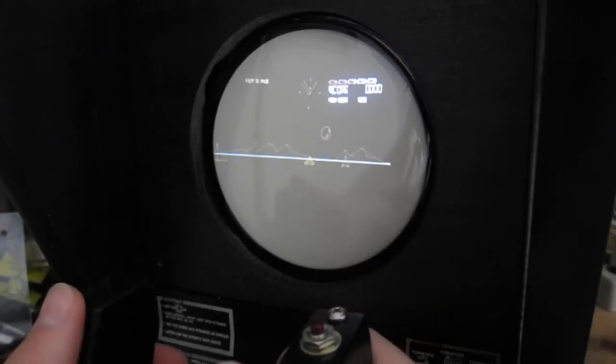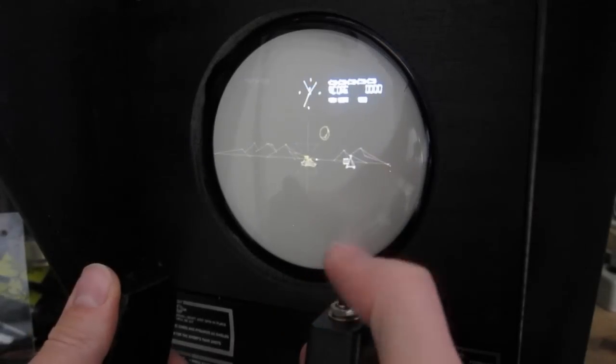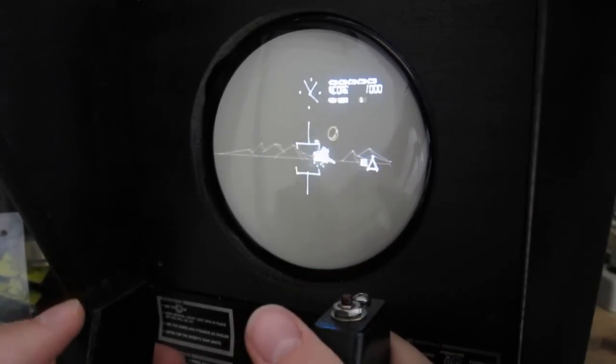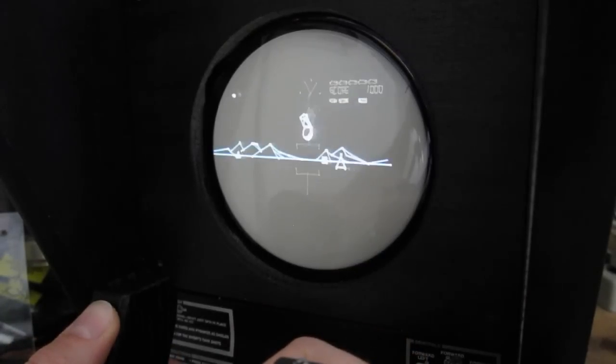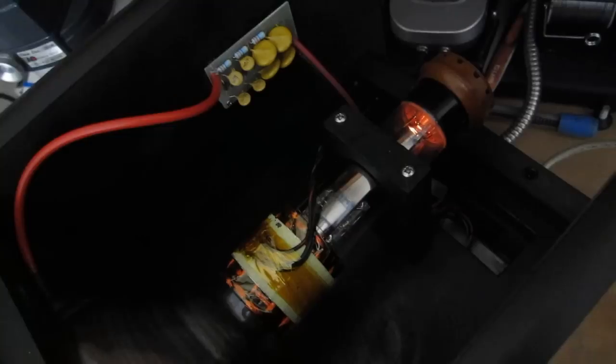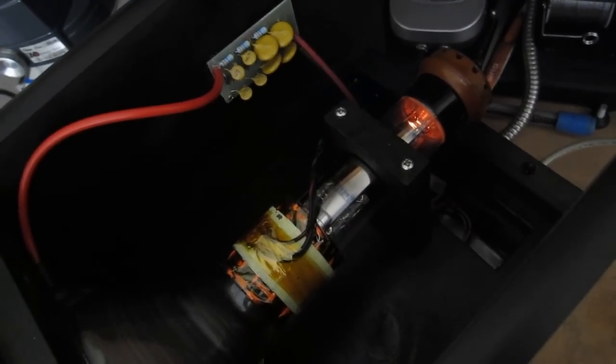I also built a second machine, this time using a 5-inch round TV test CRT. This CRT came with no deflection yoke, so I had to make one from scratch using a section of ABS plumbing pipe.